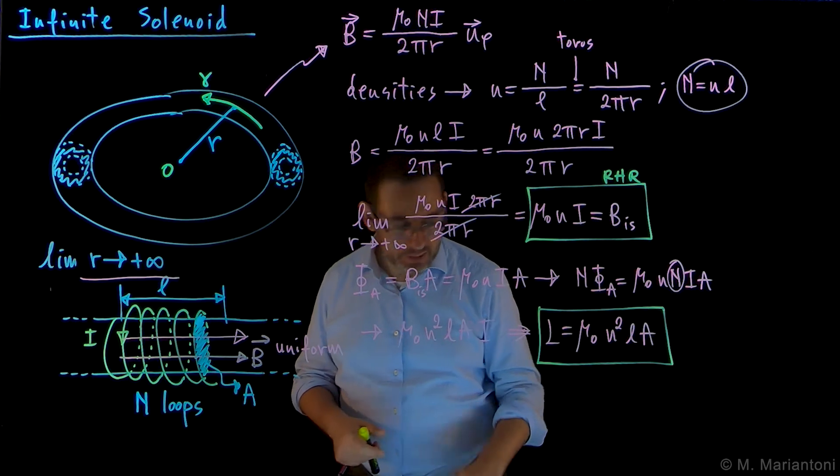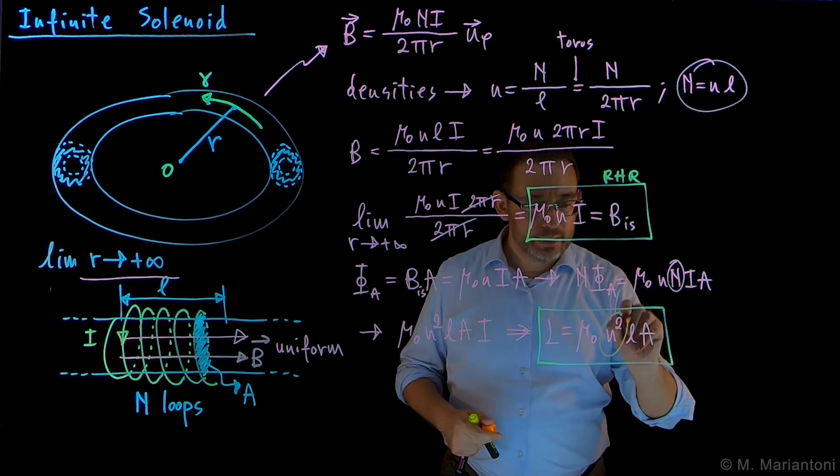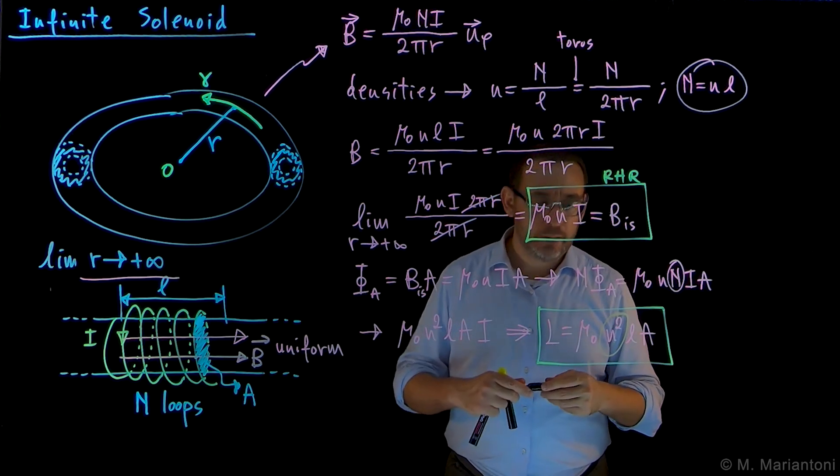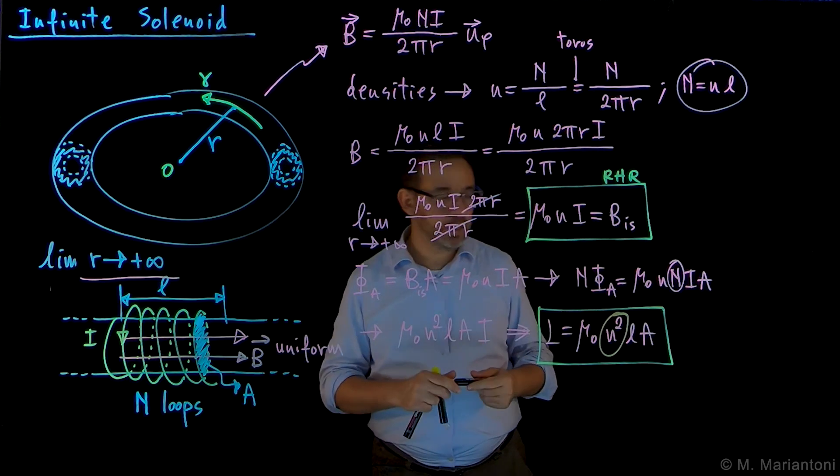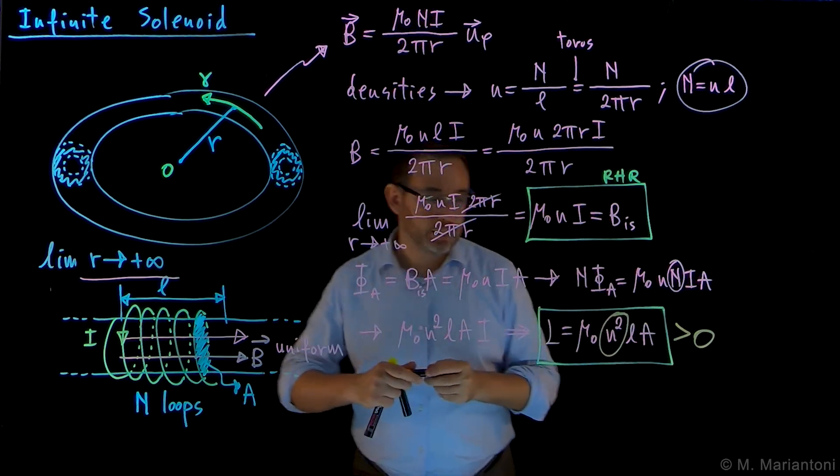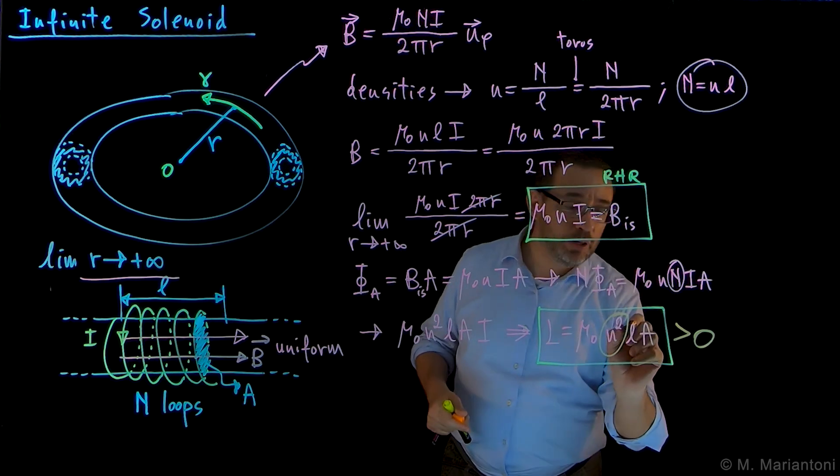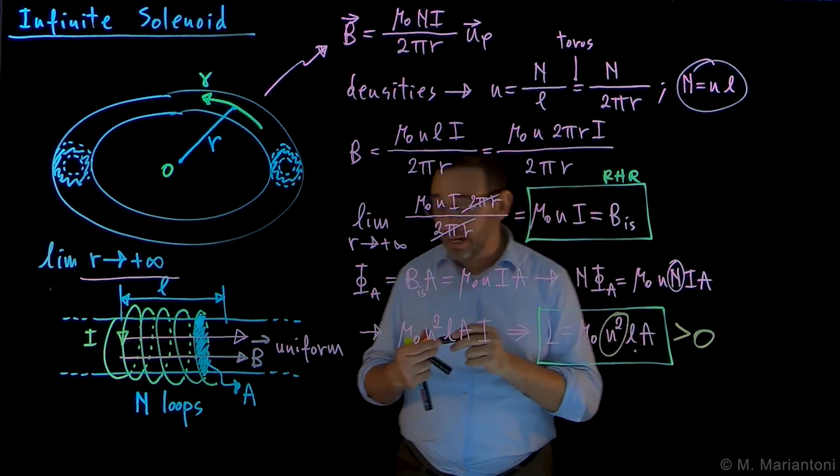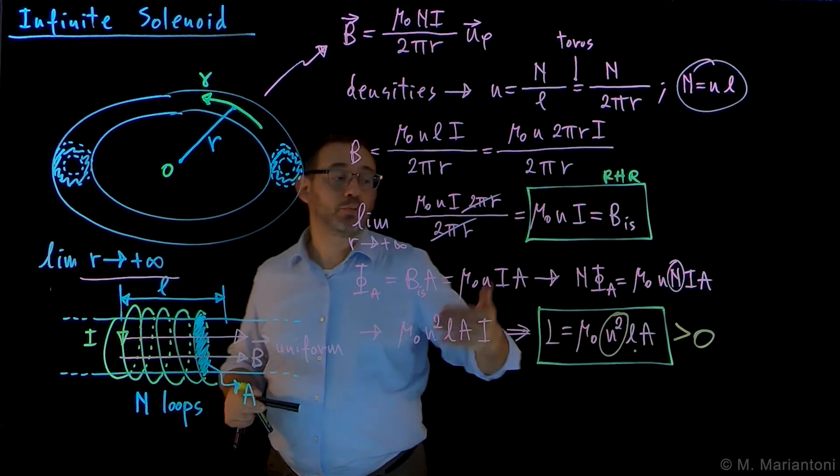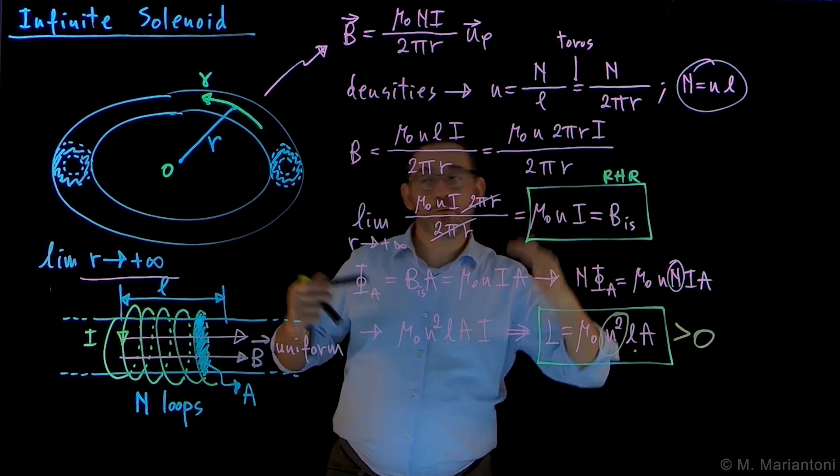So again, when we deal with self-inductances, we notice that there is an n squared dependence, even though this case is small n squared. And as always with self-inductances, this is a positive quantity. And you can also define it per unit length if you want, divided by small l, and that would be inductance per unit length.